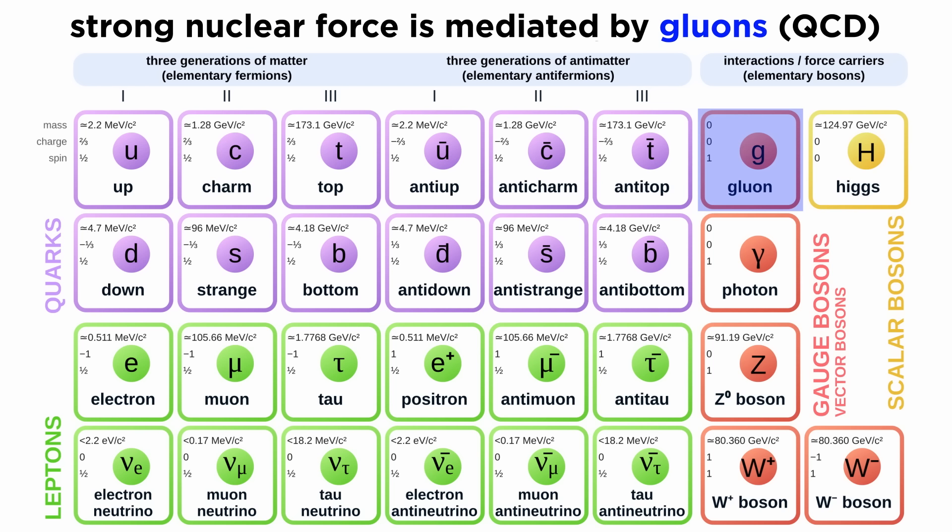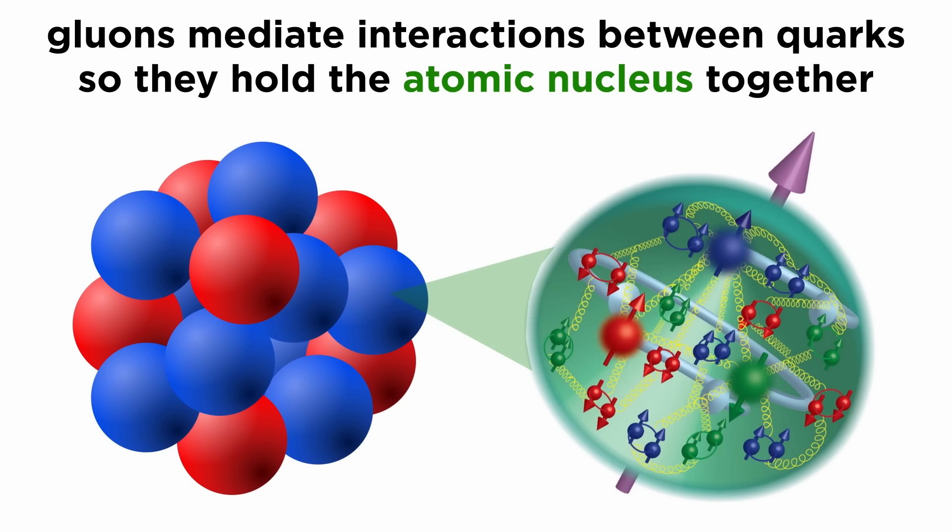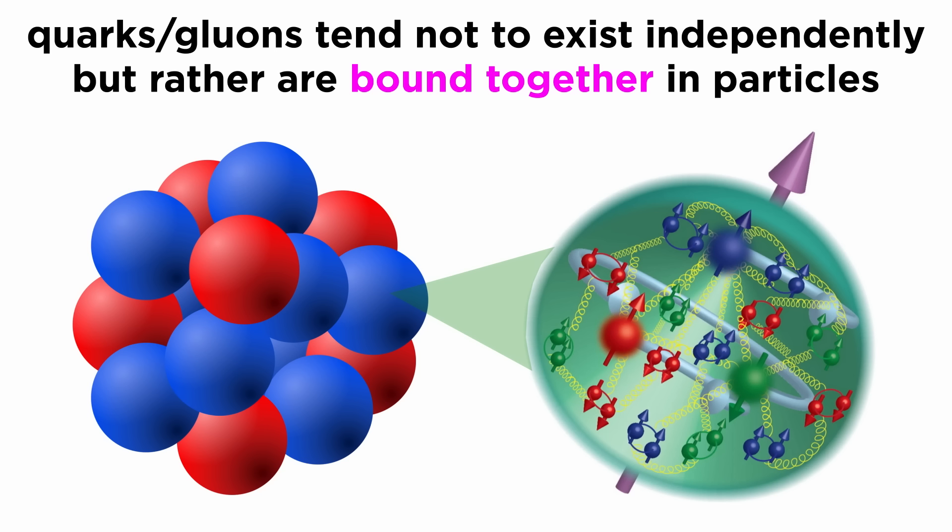The strong force, which is modeled by quantum chromodynamics, or QCD, is mediated by the gluon. This pertains to interactions between quarks, so the strong force occurs on the nuclear scale. Quarks and gluons both very rarely exist independently and prefer to exist bound together inside hadrons or mesons.